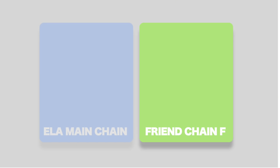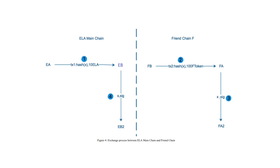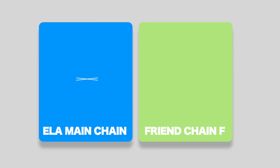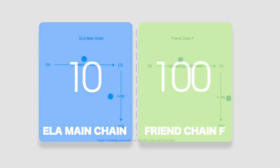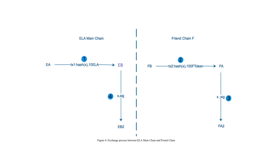Assume there is friendchain F with its own token called Ftoken. Alice and Bob need to exchange ELA and Ftoken between chains. Alice has addresses EA and FA on the Elastos and friendchain, and Bob has addresses EB and FB respectively. The market exchange rate is 1 ELA to 10 Ftoken, and Alice wants to exchange 10 ELA for 100 Ftokens with Bob. First, Alice initiates a transfer transaction from EA to FA on the Elastos mainchain for 10 ELA. The unlock condition for this transaction is the signature generated by EB's private key, along with an additional hash lock. Alice generates a random number X, which gets hashed and placed in the transaction. Bob needs to submit X to unlock the hash lock.